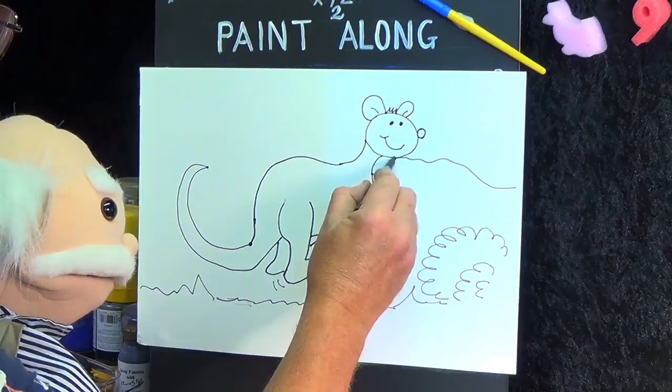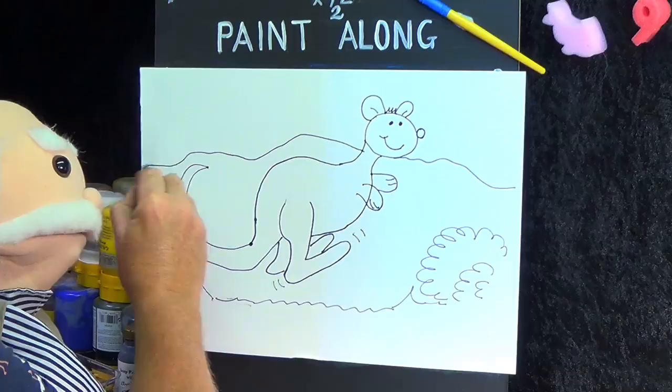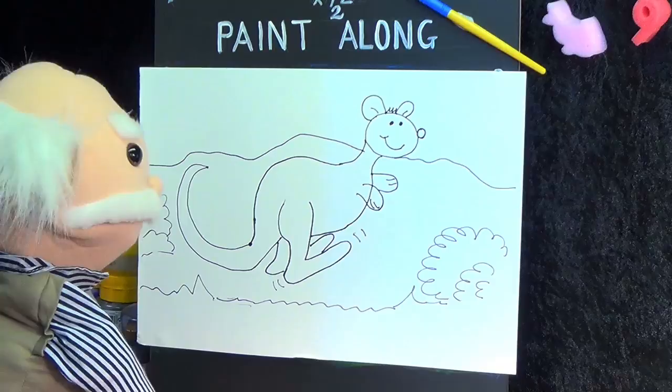And let's put some mountains in the background. That looks good. Looks good. Yes. There we go. And we'll put another little bush maybe. Go there. How's that? I think that looks excellent.